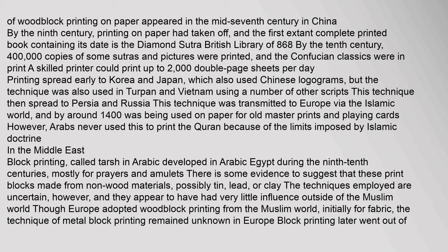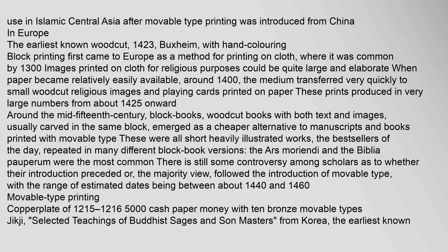Arabs never used woodblock printing to print the Quran because of the limits imposed by Islamic doctrine. In the Middle East, block printing, called Tarsh in Arabic, developed in Arabic Egypt during the 9th–10th centuries, mostly for prayers and amulets. Evidence suggests these print blocks were made from non-wood materials, possibly tin, lead, or clay. Though Europe adopted woodblock printing from the Muslim world initially for fabric, the technique of metal block printing remained unknown in Europe. Block printing later went out of use in Islamic Central Asia after movable type printing was introduced from China.